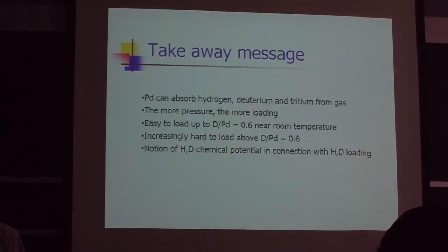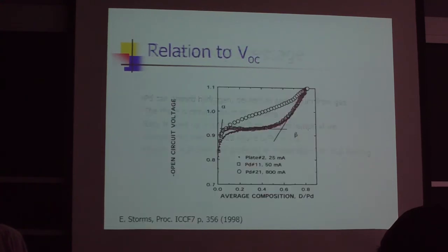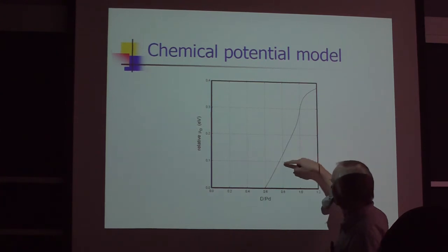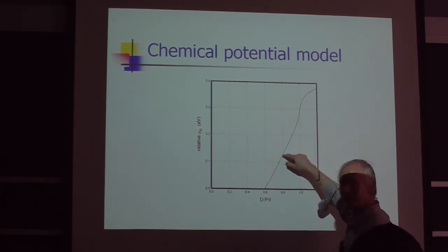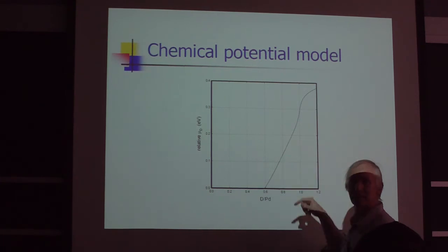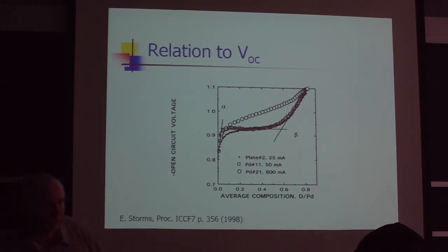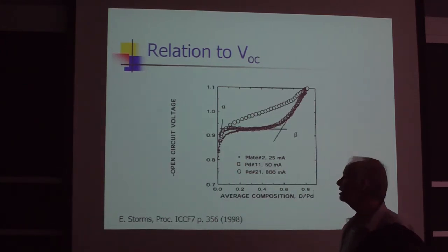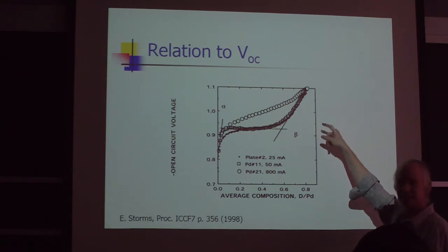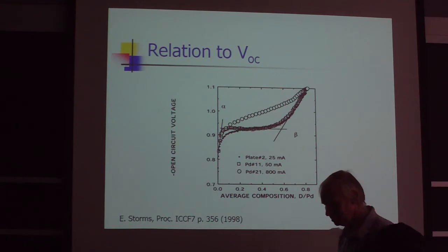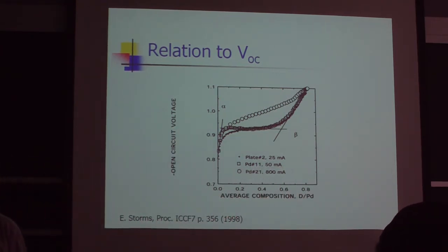And if you go back and look at the chemical potential curve, going from 0.6 to 0.8 is something in the neighborhood of 130 millivolts. So the proposal here is that in this open circuit voltage measurement that Storms is doing, in that particular measurement configuration done under conditions of slow loading, he's actually seeing the contribution from the chemical potential of the deuterium that's been loaded, which is actually interesting.